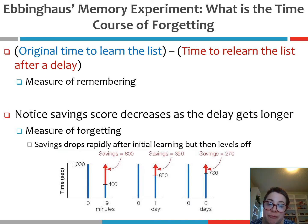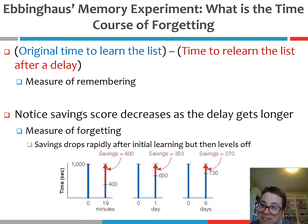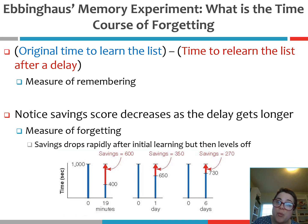What did Ebbinghaus do with this information? He basically did the same thing I walked through with you in the first example. He compared the time it took him to first learn the list to the time it took him to relearn the list after a delay, and that gave him his savings score. Just like in our example it took 30 minutes the first time and 22 minutes the second time — 24 hours later — giving a savings of eight minutes. The savings score reflects the quantitative measure of what you remember. That's what Ebbinghaus did using his nonsense syllables.